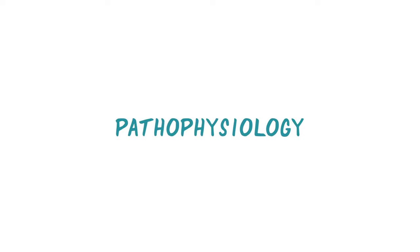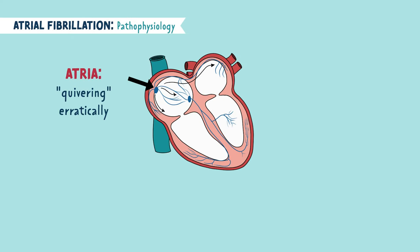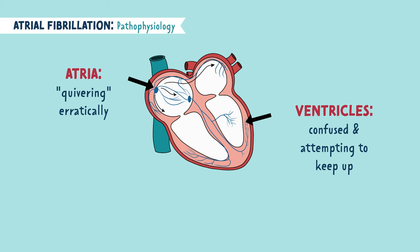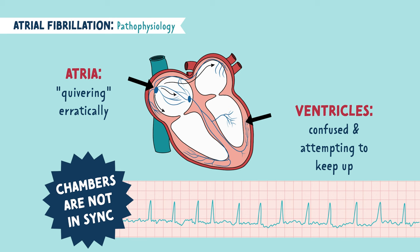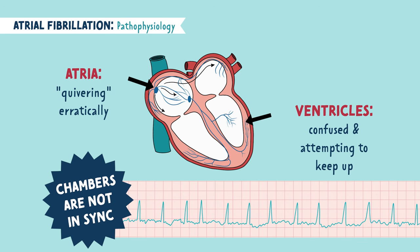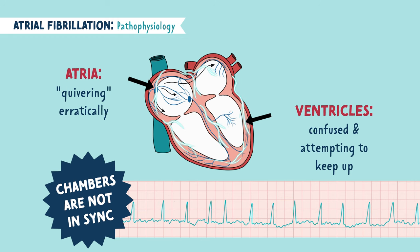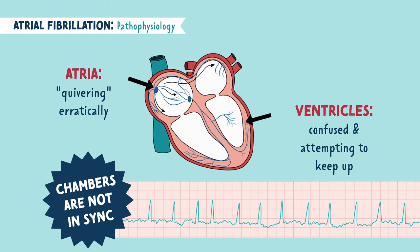Let's start with the patho. AFib is the quivering or fibbing of the muscles in the atria — the upper chambers of the heart. This causes uncoordinated contractions between the atria and the ventricles. Basically, the bottom and top chambers of the heart are not in sync because the electrical impulses are erratic and uncoordinated. The heart begins beating at an irregular rhythm with an erratic rate, and the ventricles are attempting to find some rhyme or reason to the atria's behavior — they're just trying to keep up.